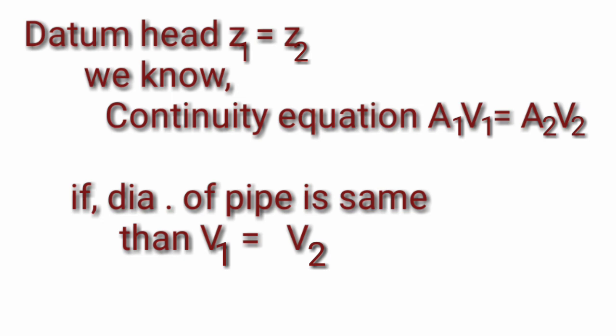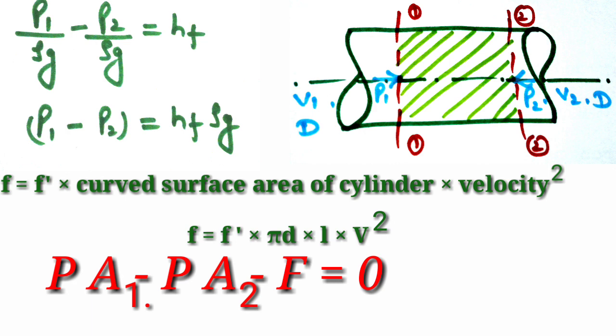Since the pipe is horizontal, Z1 equals Z2, so the datum terms cancel out. Since the pipe has the same diameter, by the continuity equation Q = A1·V1 = A2·V2, and since A1 = A2, we get V1 = V2, so the velocity head terms also cancel. This gives us P1/(ρg) − P2/(ρg) = hf, or equivalently P1 − P2 = hf·ρ·g. This is our first equation.